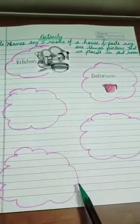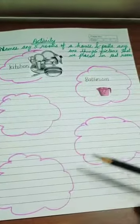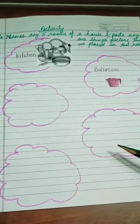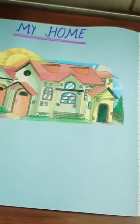You have to complete this. You have to write down the names of any five rooms and paste any one thing's picture that we placed in that room. Okay, this is your today's activity based on the theme my home.